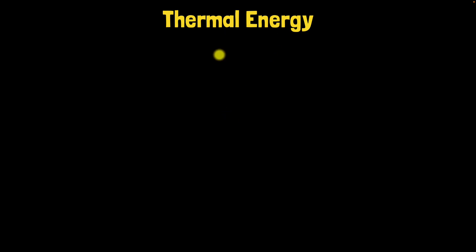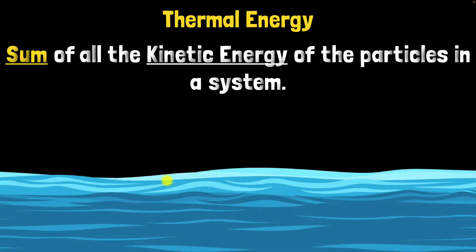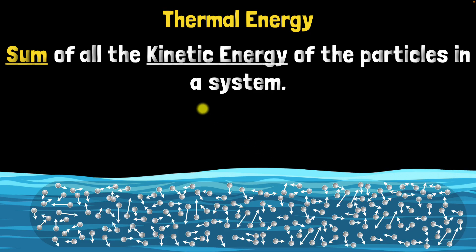So what exactly is thermal energy? Thermal energy is the sum of all the kinetic energy of all the particles in a system. For example, if you want to calculate the thermal energy of the ocean, just add up all the kinetic energies of all the particles — all the molecules like the water molecules and molecules of other substances in the ocean. Similarly, thermal energy of the air in the room is the sum of all the kinetic energies of all the molecules that make up the air in your room.